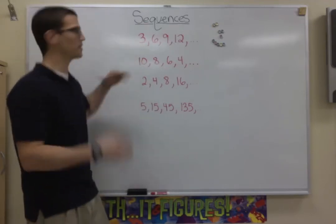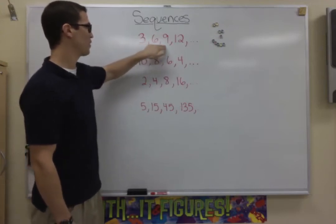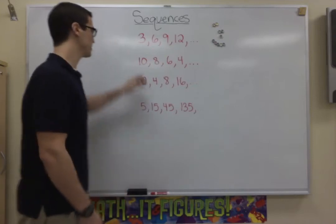So this first one, it's really basic. You're just adding 3 from the number before it to get the 3 to the 6 to the 9 to the 12. So it's pretty basic.